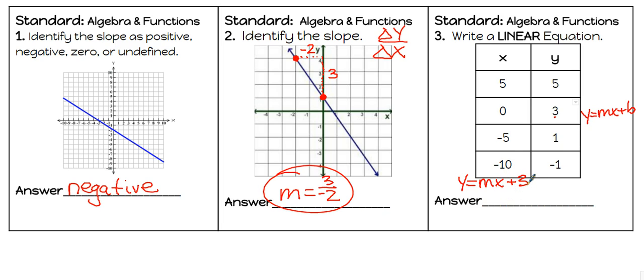Now we have to look to see if there is a constant rate of change. On the x values, we go from 5 to 0 - we're actually subtracting 5. 0 to negative 5 - subtracting 5. Negative 5 to negative 10 - subtracting 5. Now on the y values: from 5 to positive 3, we're actually subtracting 2. 3 to 1 - subtracting 2. 1 to negative 1 - also subtracting 2.